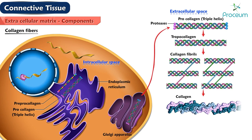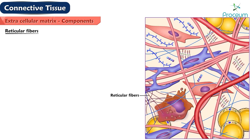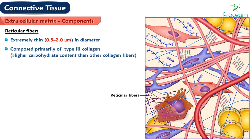The diameter of individual type 1 collagen fibrils varies greatly, 10 to 300 nanometers. These fibrils may aggregate and form cable-like structures up to several centimeters in length and display 67 nanometers periodicity. Collagen fibers are produced in a two-stage process, involving both intracellular and extracellular stages. Collagen fibers have great tensile strength, which imparts both flexibility and strength to tissues containing them. Reticular fibers are extremely thin, 0.5 to 2 micrometers in diameter, and are composed primarily of type 3 collagen. They have higher carbohydrate content than other collagen fibers.